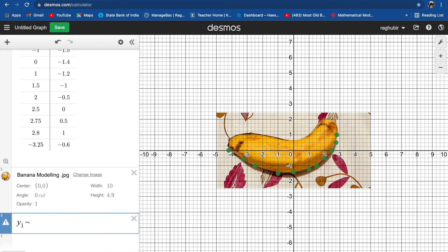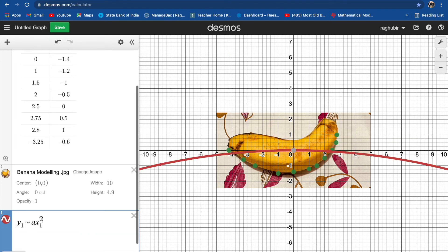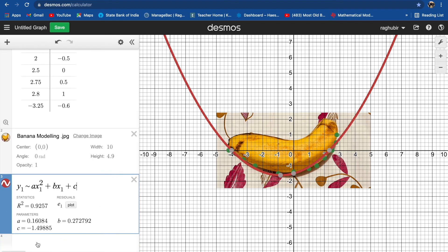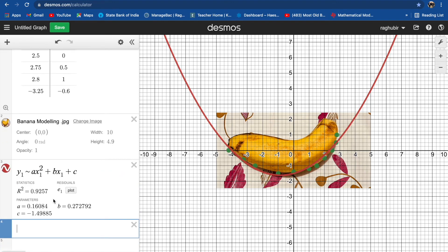Like this with the parameters: y subscript 1 equals a times x subscript 1 squared plus b times x subscript 1 plus c. And you can see the parabolic model on your screen. Well, in this case R squared is 92.6, so that means 92.6 percent of the variation in height of my banana is explained by the width of my banana.